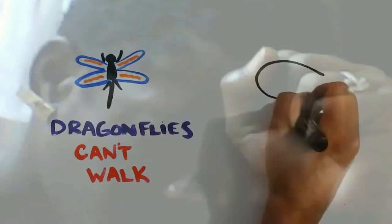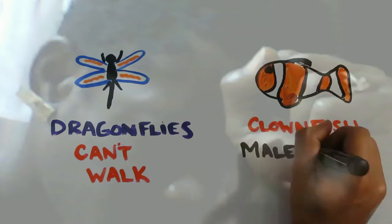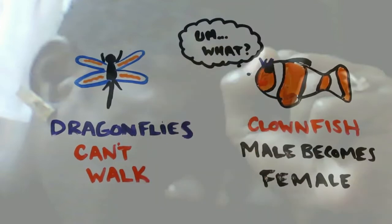And did you know that while dragonflies have legs, they can't walk, only land? Or that in a population of clownfish, if the female dies or is removed, the most dominant male will become a female?